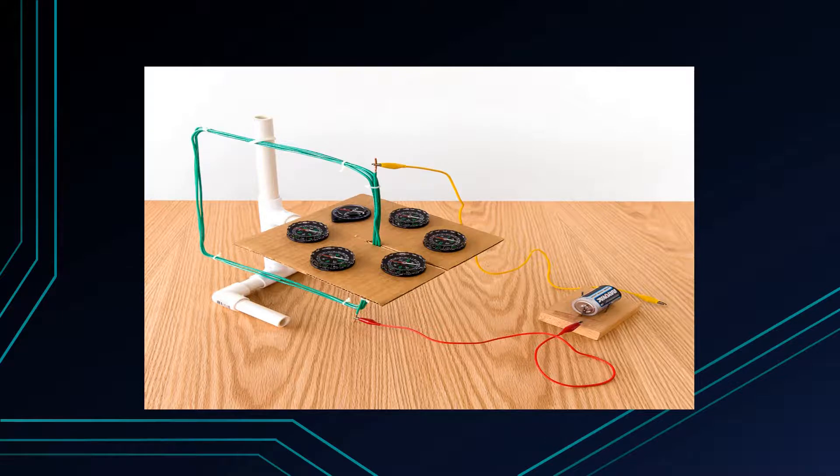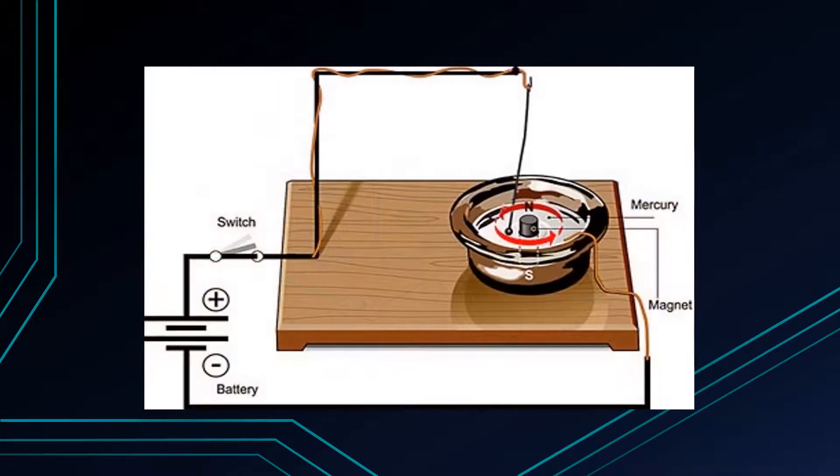The boy came home and for days he experimented. He came to a project where he placed a cup with mercury. The magnet dipped in it vertically and a copper wire attached to the battery suspended around the magnet.